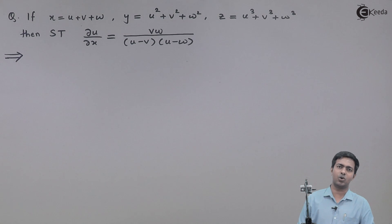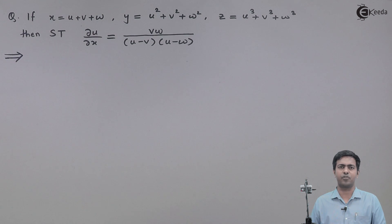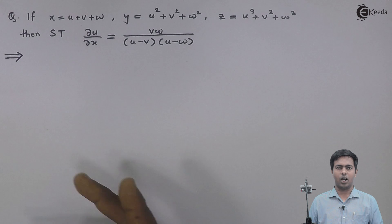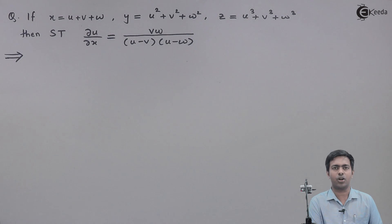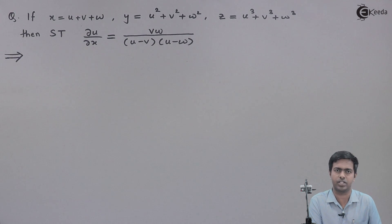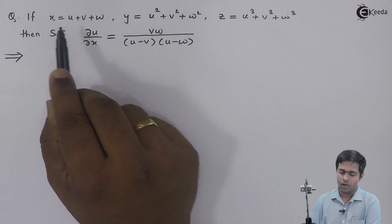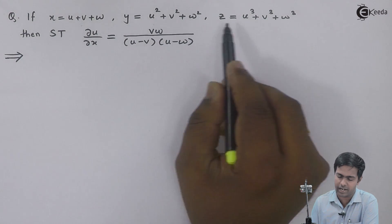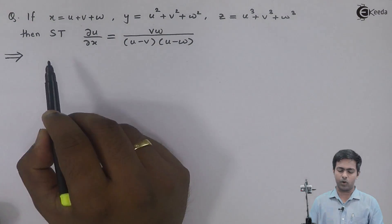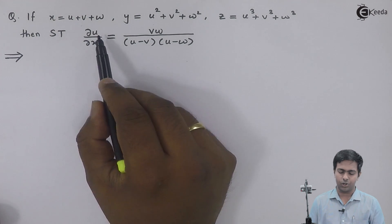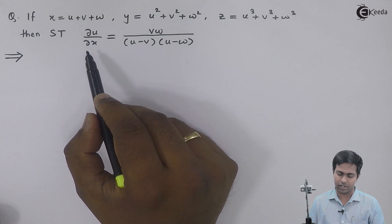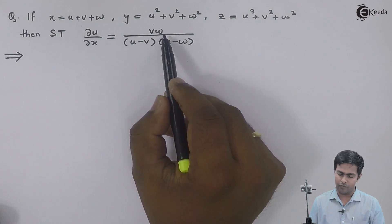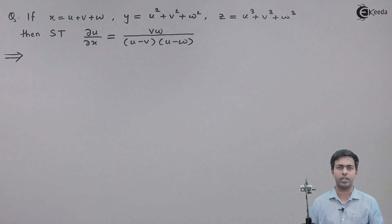Hi friends, in this video we are going to see a problem based on partial derivatives using Jacobians. Here the value of x, y and z is given in terms of u, v and w, and the question is to show that dou u by dou x is equal to vw upon u minus v into u minus w.